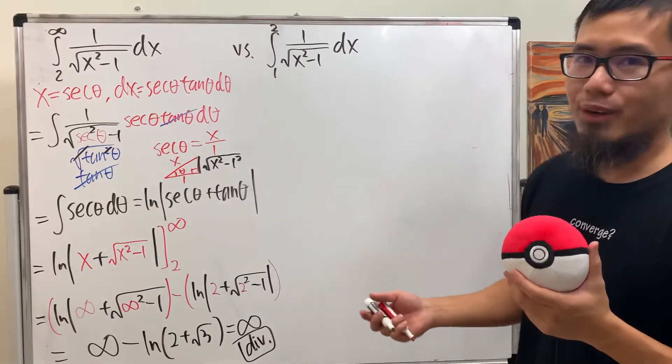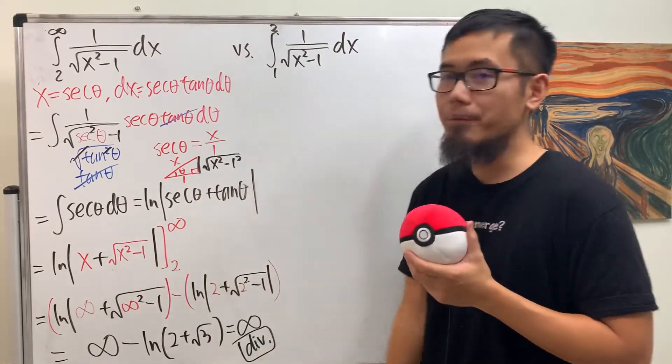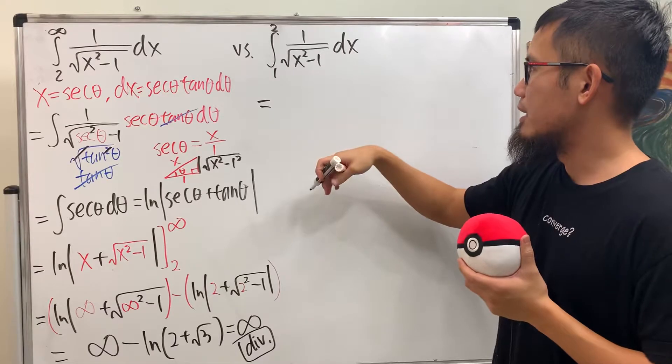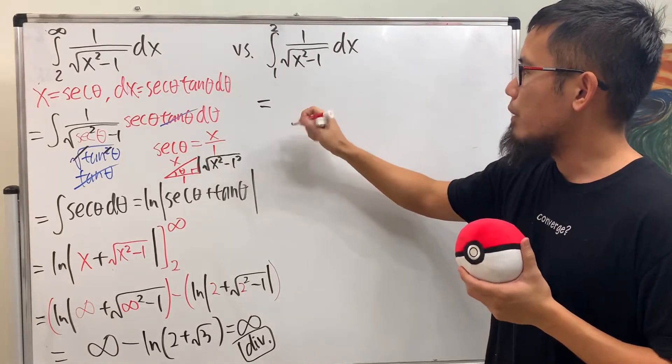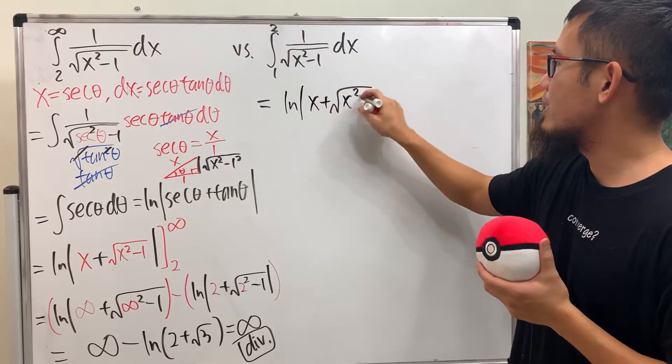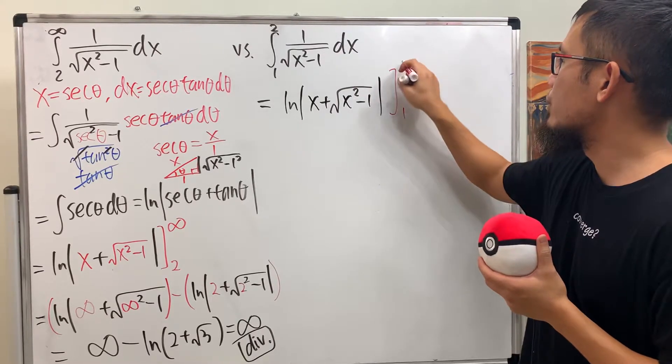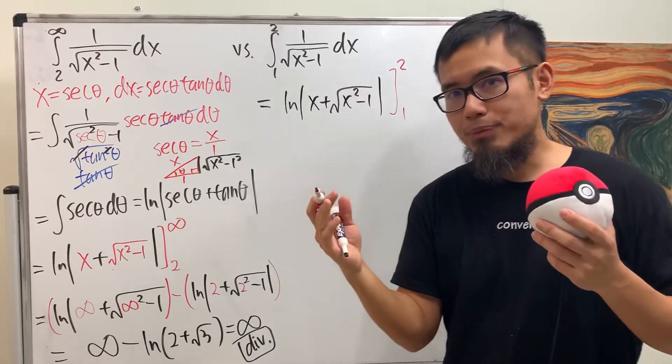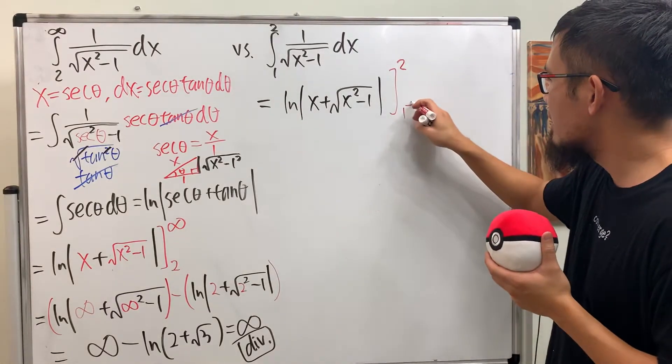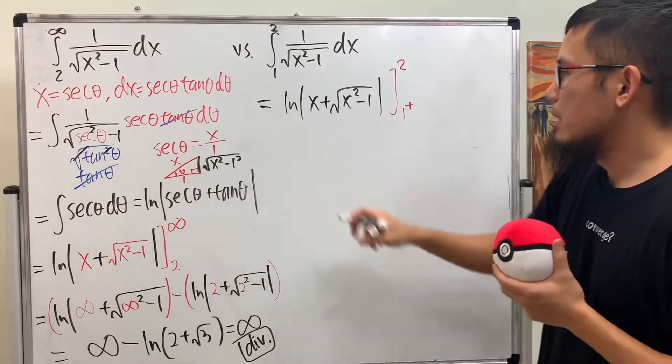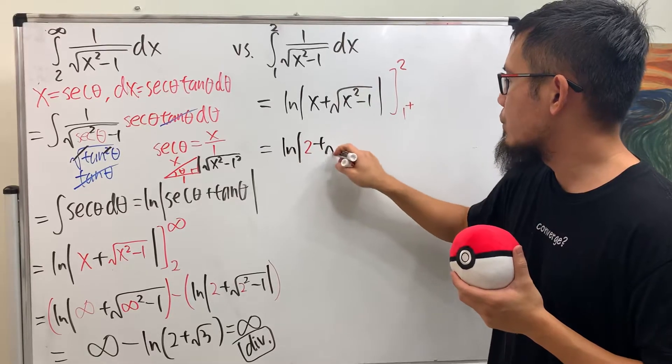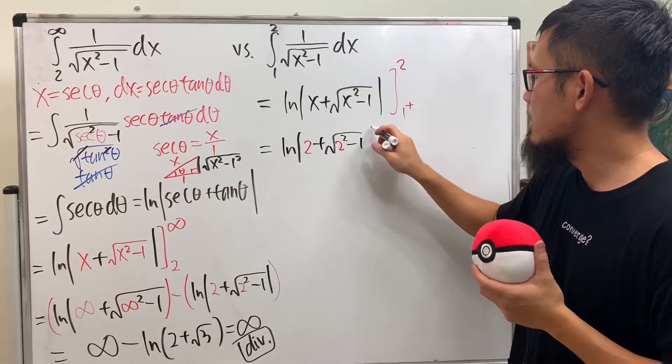All right, we did the hard work already though, because we used the trig sub to get the integration right here, so we'll come back here and do the same thing, just use that and then put it down and then figure it out. This is ln absolute value of x plus square root of x squared minus 1, and then we have to go from 1 to 2. Here we are going from 1 to 2, but when x equals 1, that will give you a vertical asymptote. But anyway though, go ahead and plug in, so you get ln of 2 plus square root of 2 squared minus 1, that's the first part.